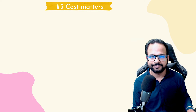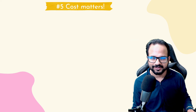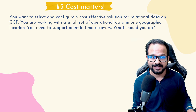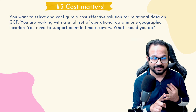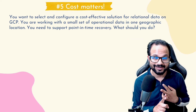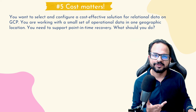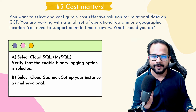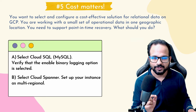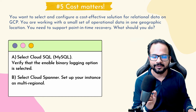Tip number five: while answering your question, make sure your solution is cost effective and a Google recommended best practice. Suppose you want to select and configure a cost effective solution for relational data on GCP. You are working with a small set of operational data in one geographical location, and you need to support point-in-time recovery as well. There are two services that support relational data in GCP: Cloud SQL and Cloud Spanner. Both satisfy the requirement; however, cost effectiveness is a key requirement here and there is only a small set of data. Using Cloud Spanner would be an overkill, so Cloud SQL with binary logging enabled would satisfy the requirement.